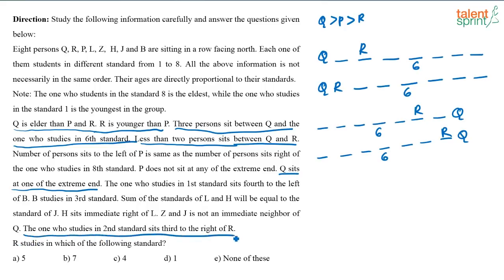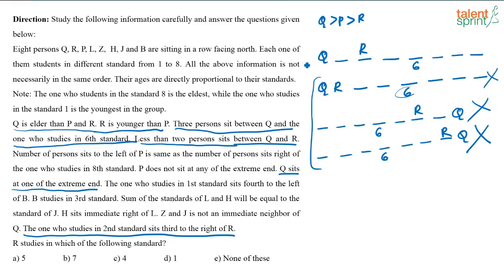The one who studies in second standard sits third to the right of R. If R is adjacent to Q at the left end, there is no space for three positions to the right — so that possibility is wrong. Similarly, other sub-cases fail this condition. Also, in one case the third position to the right of R already has 6th standard placed there, which is a contradiction. So all three incorrect cases are eliminated, and we are left with only one valid arrangement: Q, dash, R, dash, 6th standard.